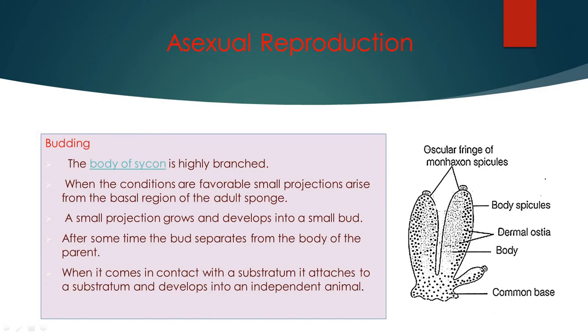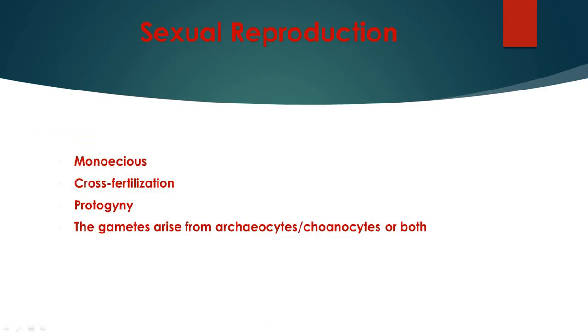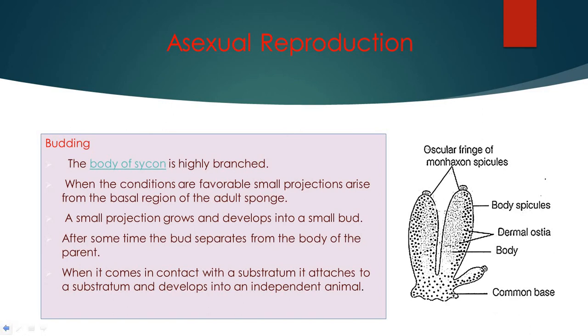The body of the hydra is highly branched. When the conditions are favorable, small projections arise. See in the diagram, small projection is taken up at the base and gradually the adult, small projection arises and then it starts growing up. And then it grows very large. So small bud grows into a large bud formation. After some time the bud separates from the main body.